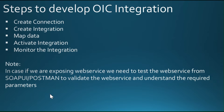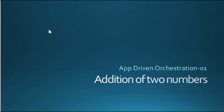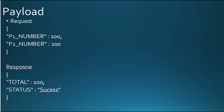Let's see how we can develop a basic integration. In this integration, we are going to calculate addition of two numbers. For that, we are going to use the app-driven orchestration pattern. In this example, we are using two payloads. One is the request payload which contains two numbers P1 and P2.